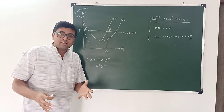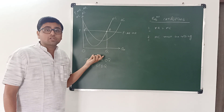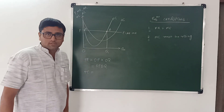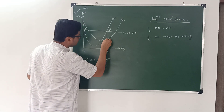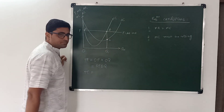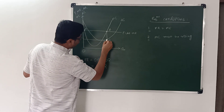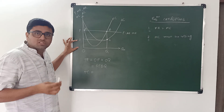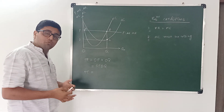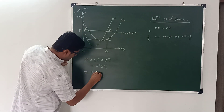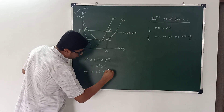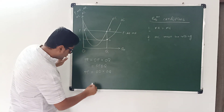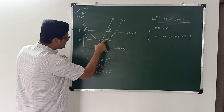Now we want to find the cost of production of OQ, that is total cost. Suppose this is point C. OC and CQ and OD show the per unit cost. If we want to find the total cost, it is OD into OQ, that is average cost into total quantity, which equals ODCQ.